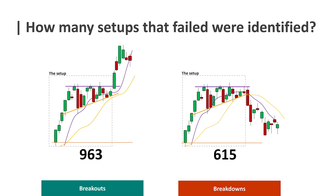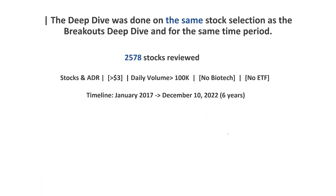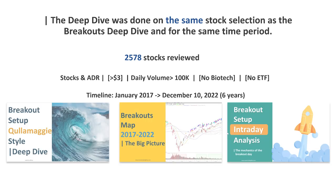When we discuss the setup, it refers to the first leg upwards and then the consolidation. The deep dive was done on the same stock selection as the breakout deep dive and included the same time period. A total of 2,578 stocks were reviewed. As with the breakouts, no biotech and no ETFs were included, and a timeline of January 2017 to December 2022. For more details on the breakout setup, I highly advise you to watch the videos available on the channel.